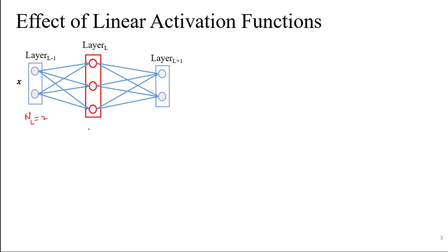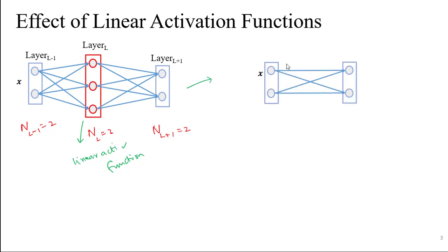On this slide we have shown a neural network and this neural network has three layers. Layer L minus 1, L, and L plus 1 has 2, 3, and 2 neurons respectively. Further we assume that layer L has linear activation function while layer L minus 1 and L plus 1 has nonlinear activation functions. Now what is the effect of using a linear activation function in layer L?